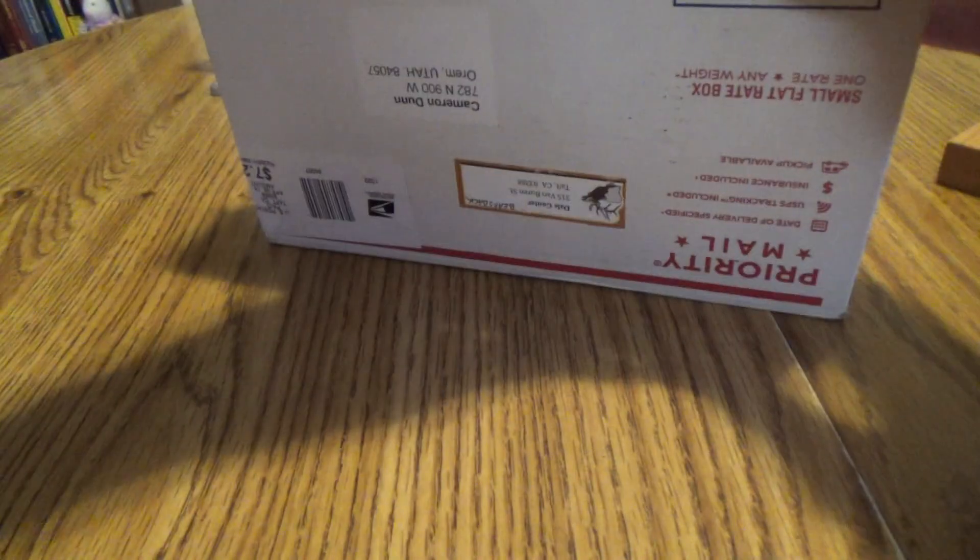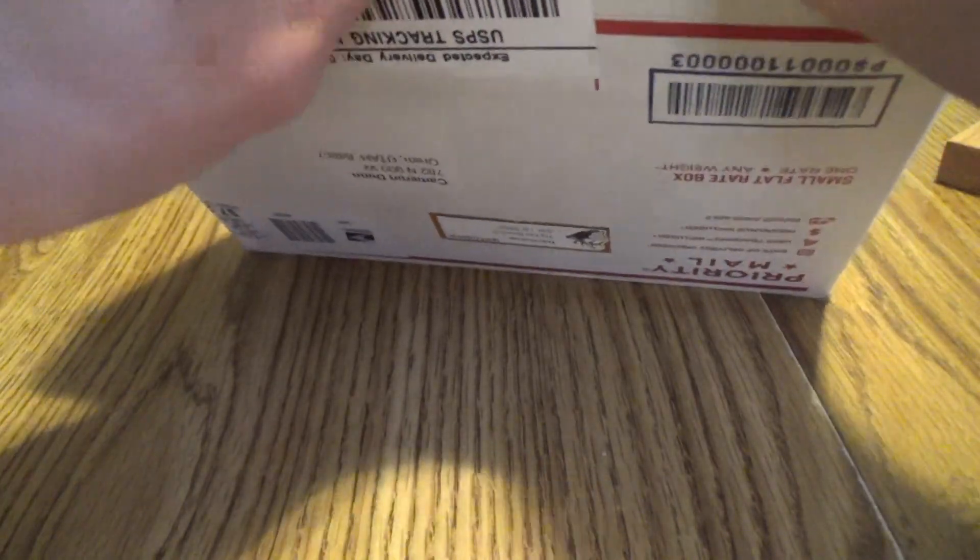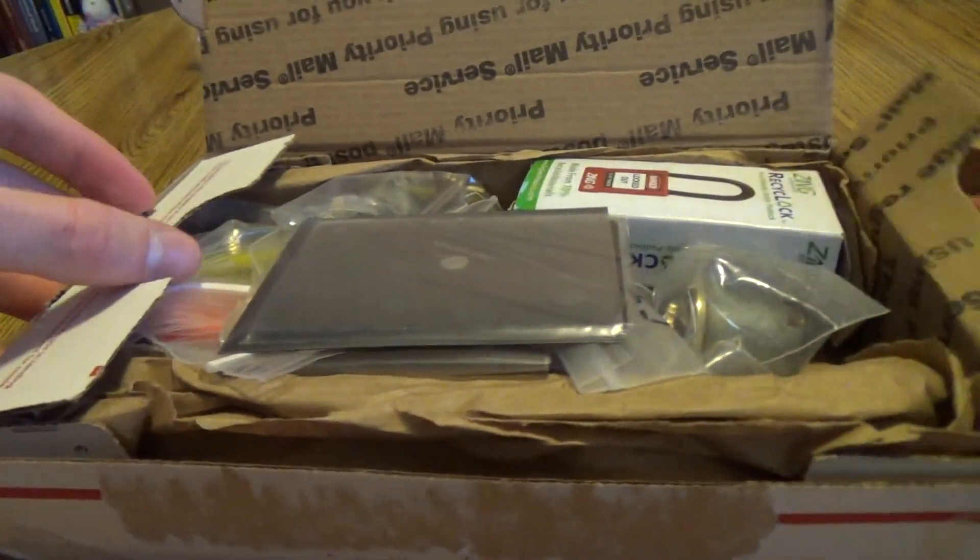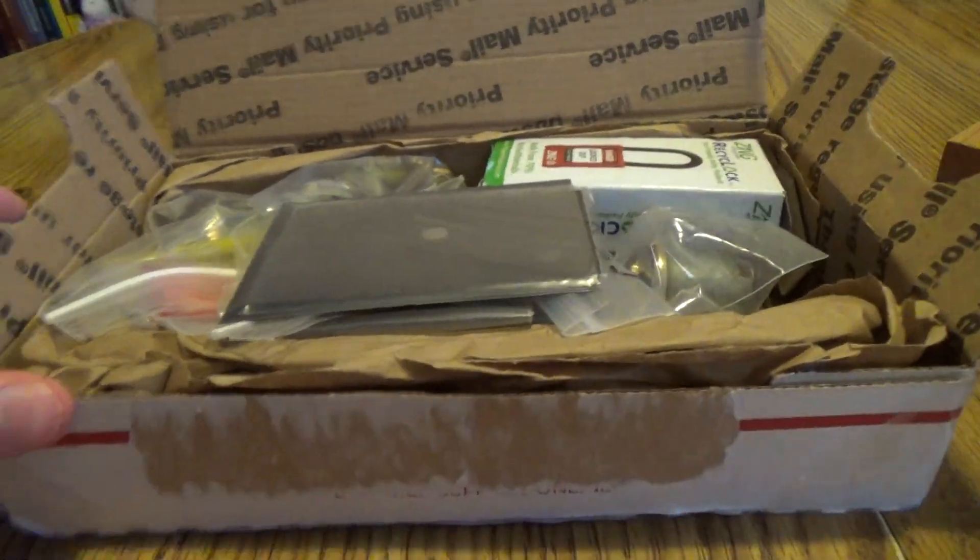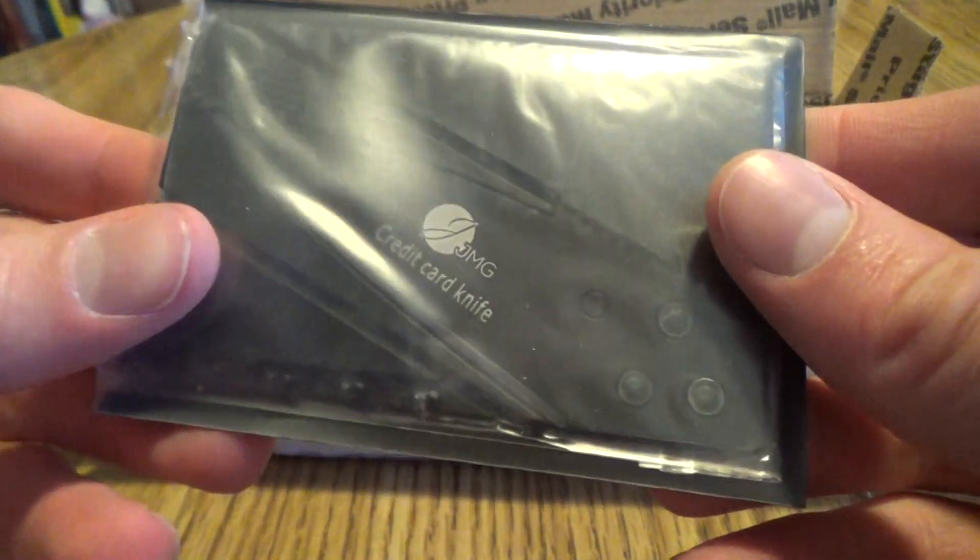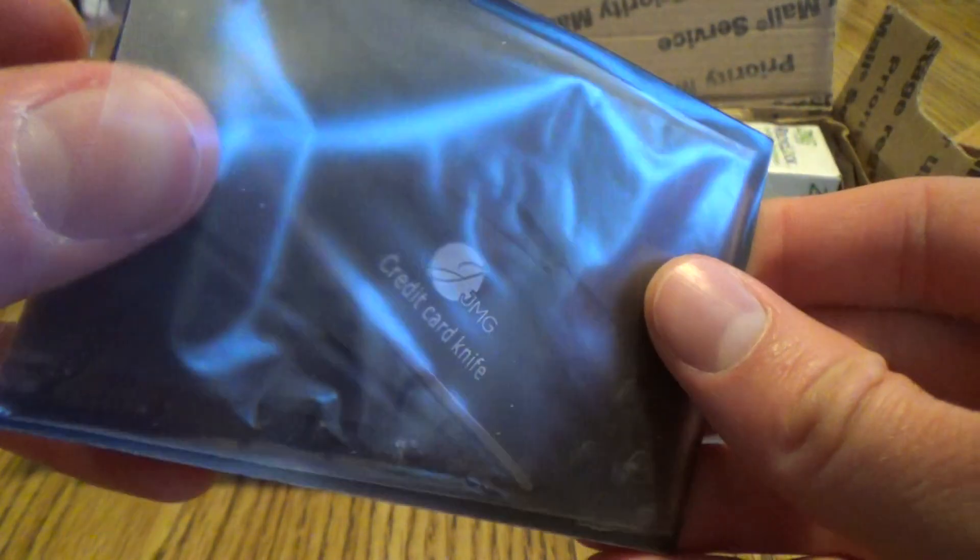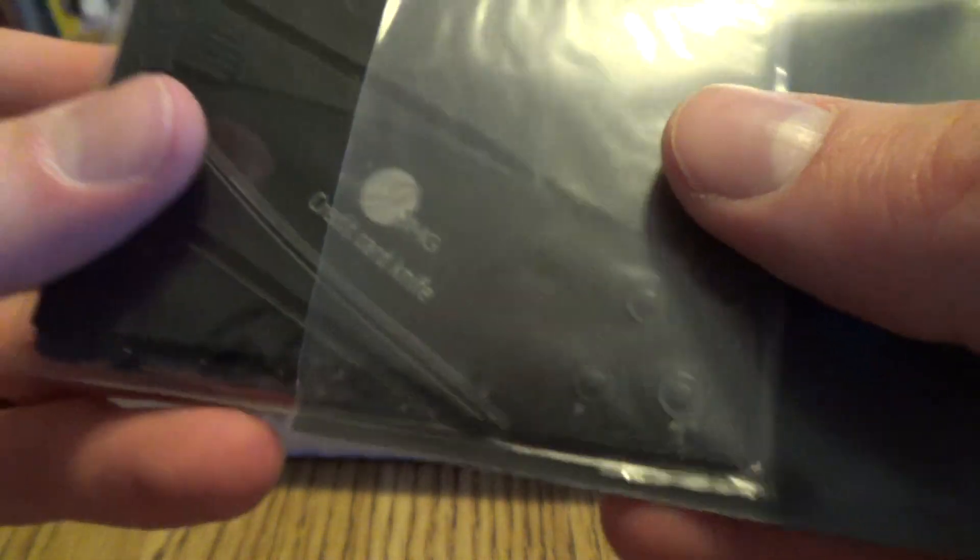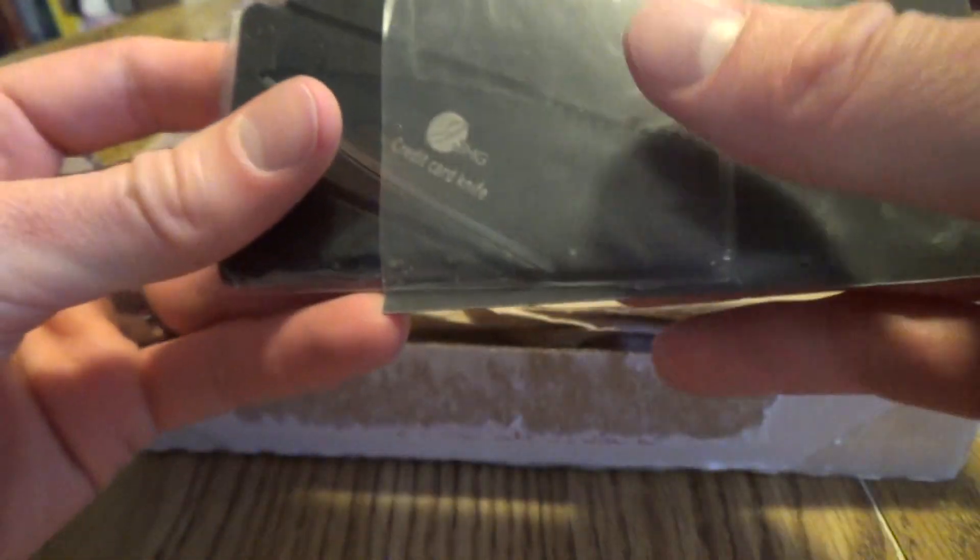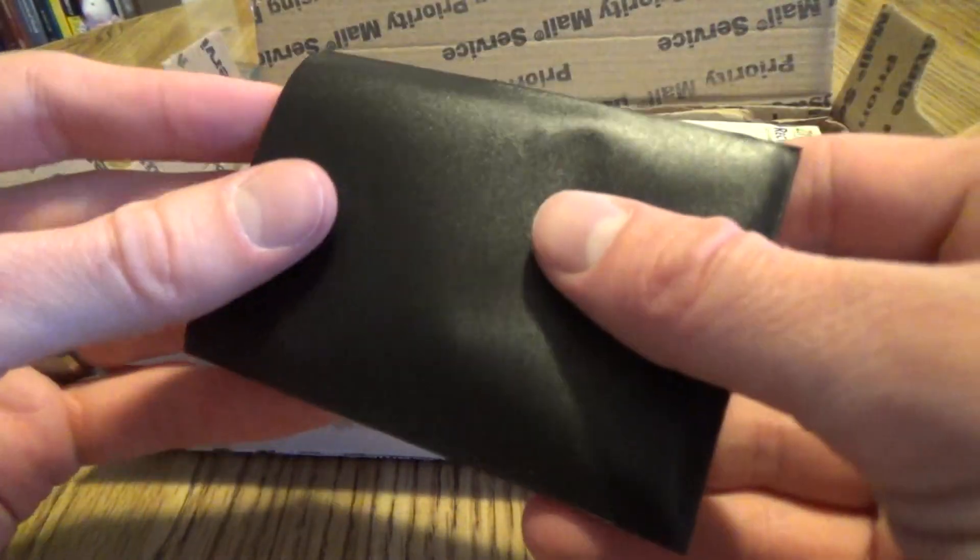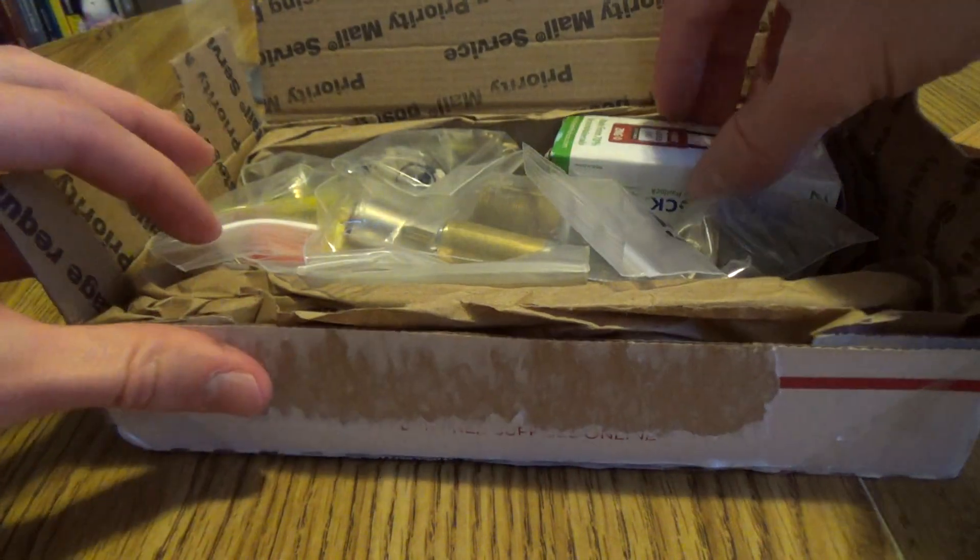Alright, let's see what we have in here. I'm already seeing some treats. We've got these nice credit card knives. These are really cool, I really like these. I have one, but it was like 60 cents on a Chinese website, so I'm sure it's nowhere near as nice as this one. It's got a nice little case to keep it in. That is awesome, thank you very much.